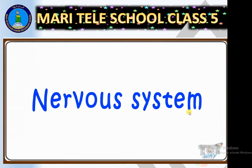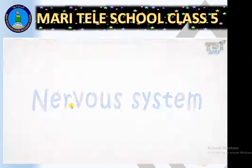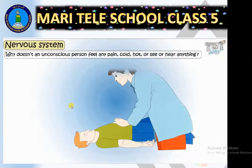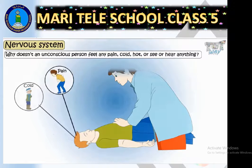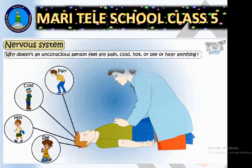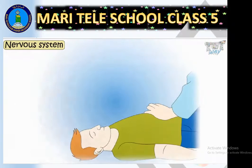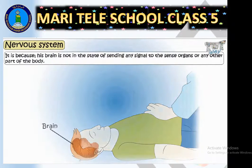Today we'll talk about the nervous system. Have you ever wondered why an unconscious person doesn't feel any pain, cold, or heat, or see or hear anything? This is because his brain is not in a state of sending any signals to the sense organs or other parts of the body.